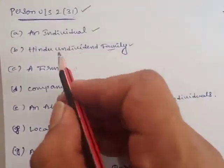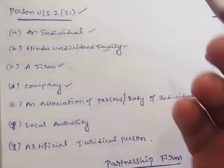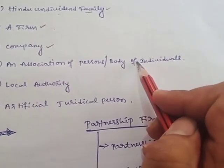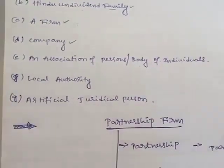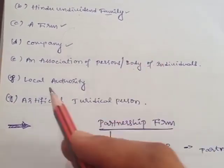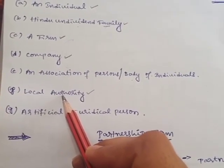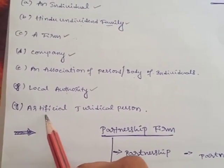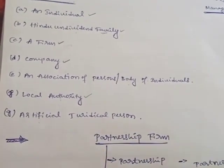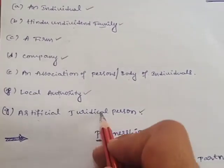We already discussed the company chapter in detail. Today we are going to discuss the firm category. Next is association of persons or body of individuals — two or more persons coming together with a common goal, like the Cricket Board of India. They are also eligible to pay tax. Next is local authority — municipalities, panchayat — they are also eligible to pay tax. Last is artificial juridical person. In income tax, even God has to pay tax — any deity, idol, or institution constituted through an act comes under artificial juridical persons.